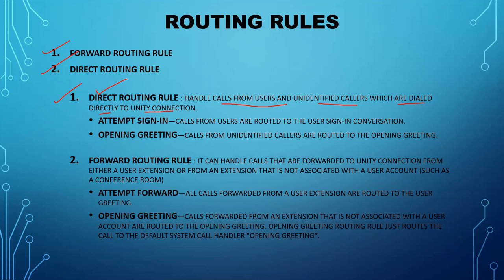When you press the messaging button on the Cisco phone, it goes to the Unity number configured in CUCM. On that particular phone it goes to the voicemail profile, and in the voicemail profile the voicemail number is specified, which routes the call to Cisco Unity Connection — and since it goes directly, it hits the direct routing rule.